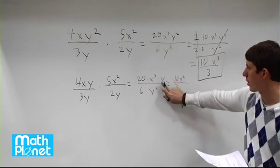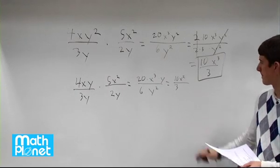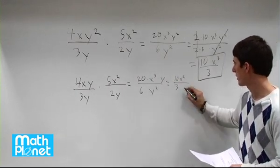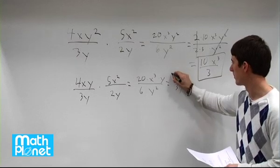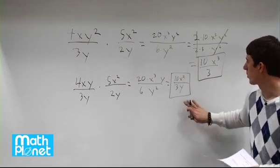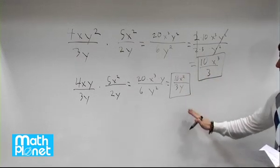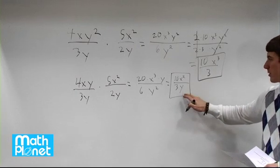But now only one power of the y is canceled. So in this case we cancel this one and one of these. That leaves a y here. So quite similar answers. The difference being here, we have a variable in the bottom.